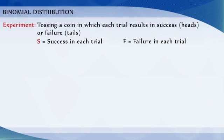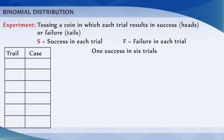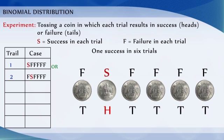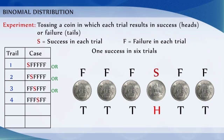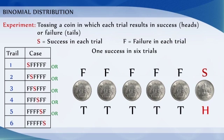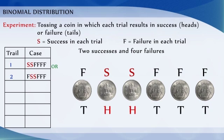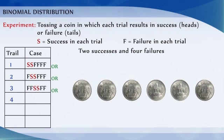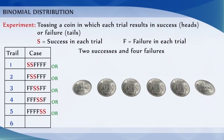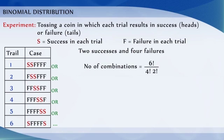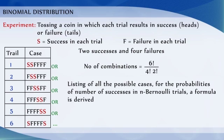Suppose we are interested in finding the ways in which we have 2 successes in 6 trials. Then we get 6 different cases, 2 successes and 4 failures. We get 6 factorial by 4 factorial into 2 factorial combinations. Therefore, this process is a very lengthy process.